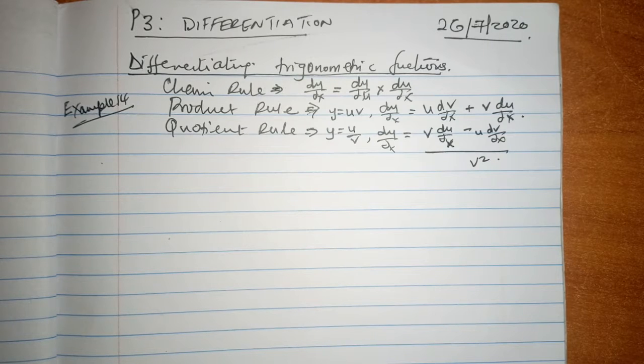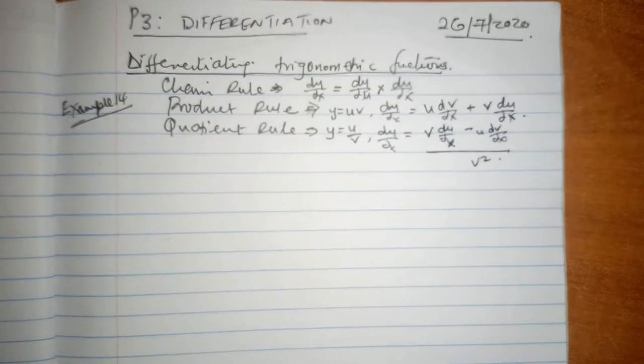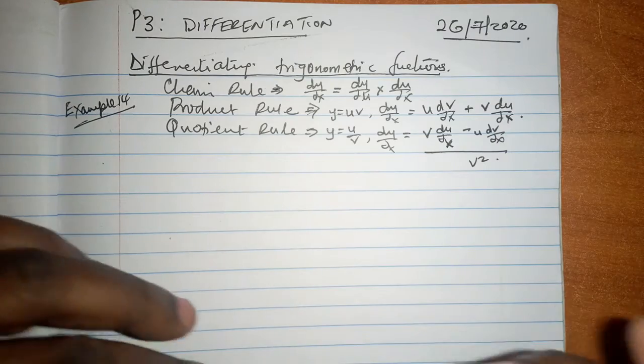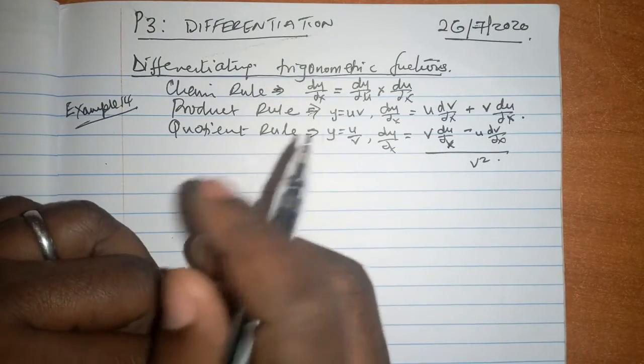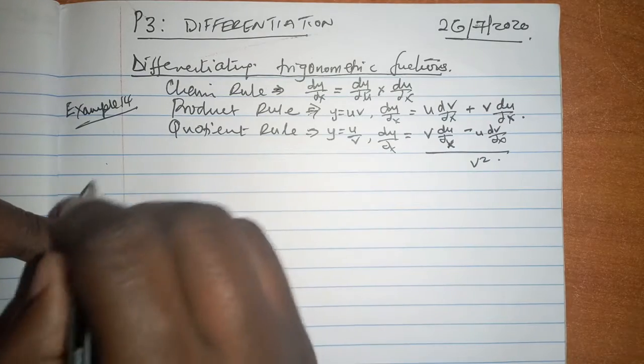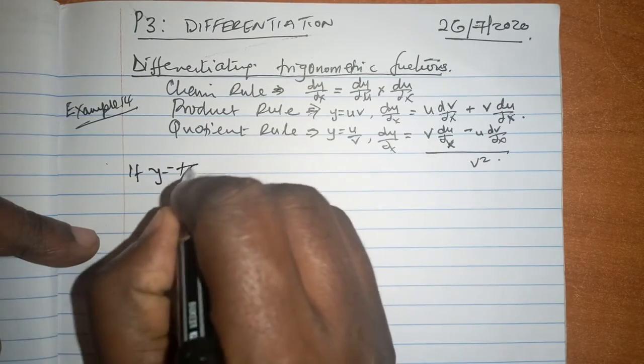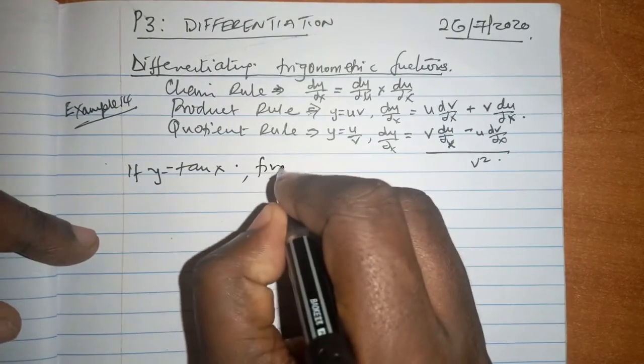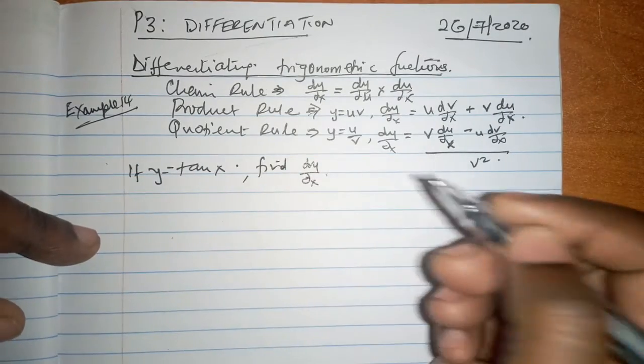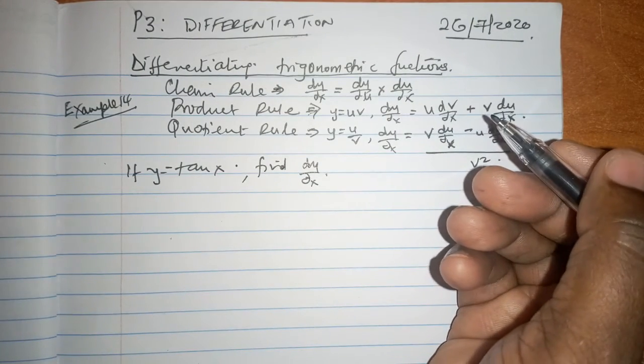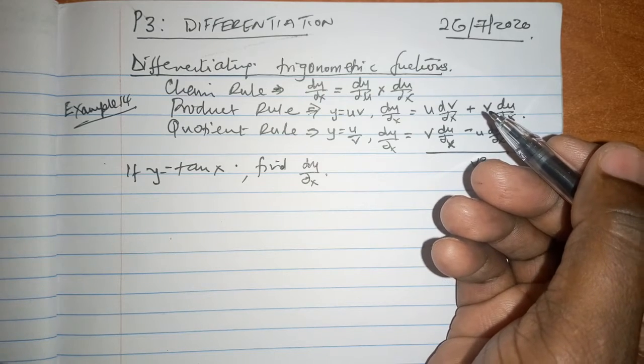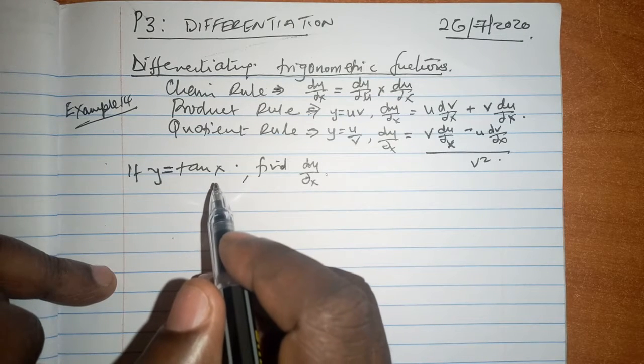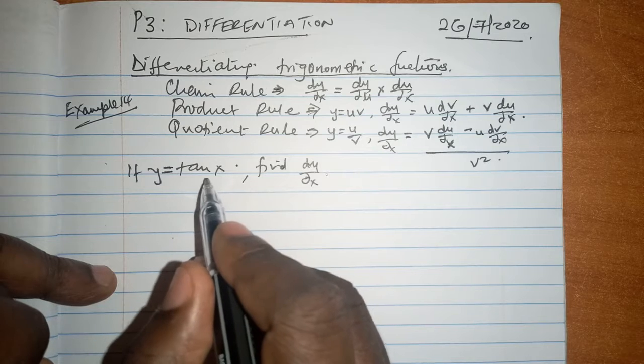Now in example 14, I want us to look at the question at hand and we are going to say: if y is equal to the tangent of x, then find dy/dx. We need to realise which rule here are we going to use. Earlier on we have not been taught or we have not learnt direct derivative of the tangent of x.